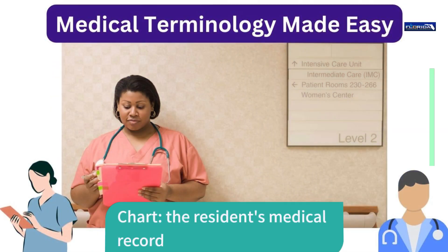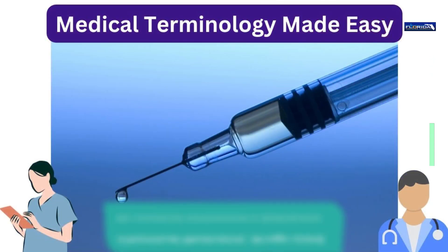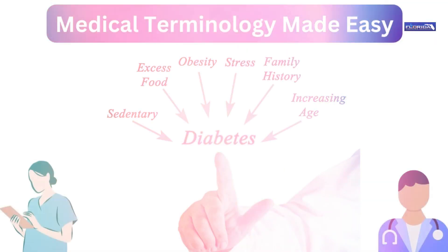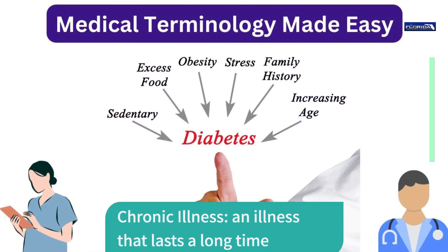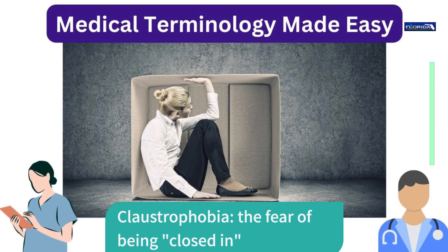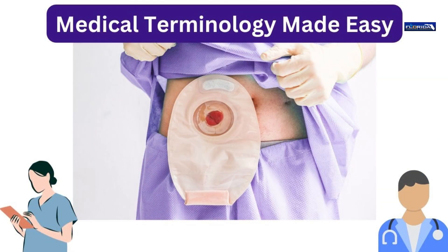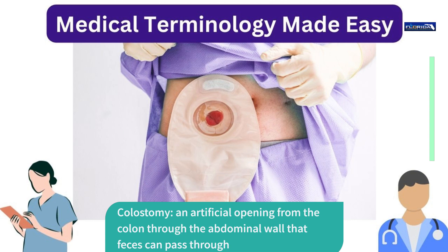Chart: the resident's medical record. Chemical restraint: drugs used to control someone's behavior. Chronic illness: an illness that lasts a long time. Claustrophobia: the fear of being closed in. Colon: large intestine. Colostomy: an artificial opening from the colon through the abdominal wall that feces can pass through.